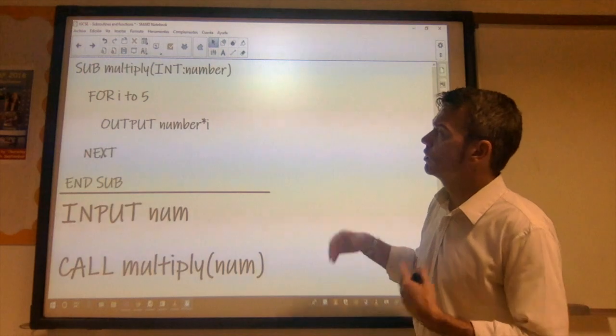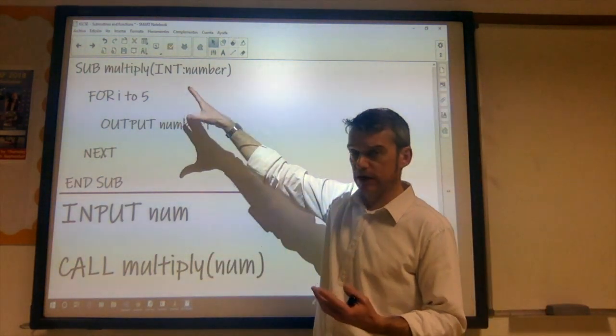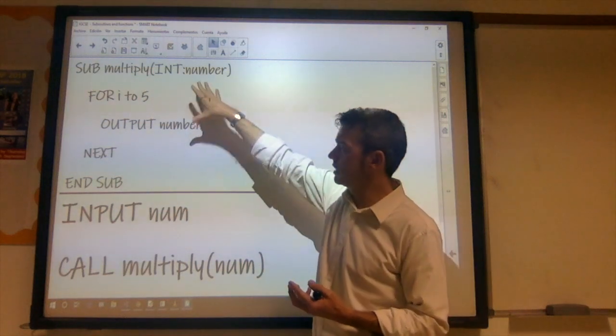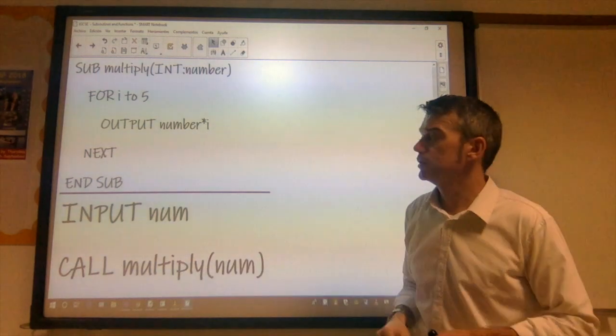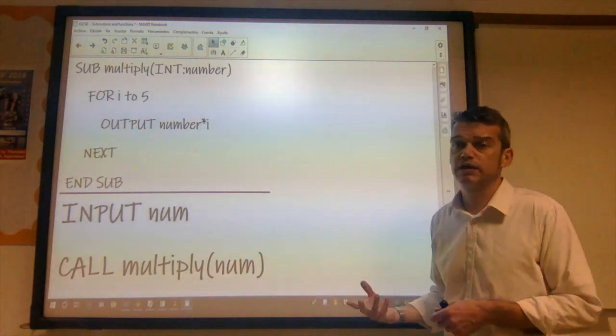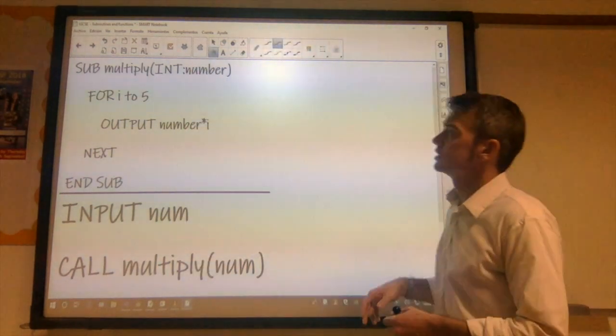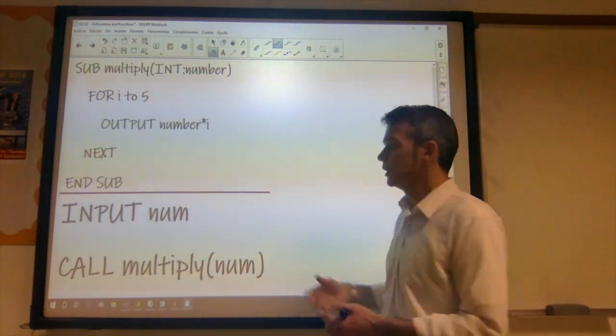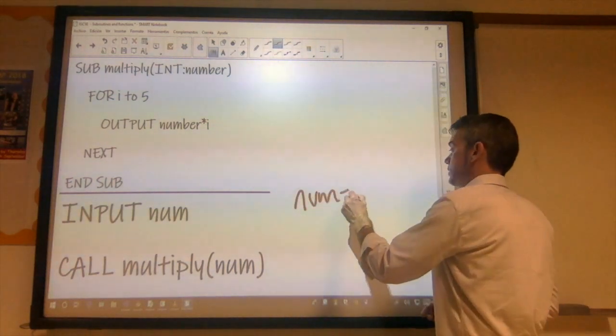Okay, so what's happening here? Well, when we execute the program, this block of code is ignored to begin with. So the first line to be executed is input number. So we ask the user for a number to input. Let's say the user inputs the number, let's keep it simple, 2. Okay, so num is equal to 2.